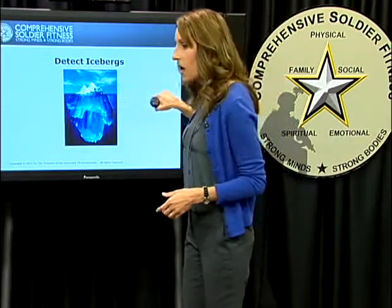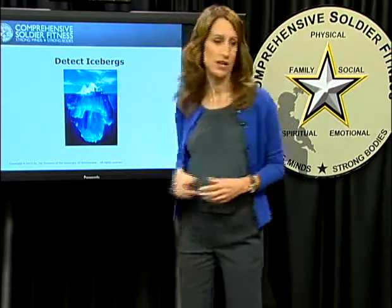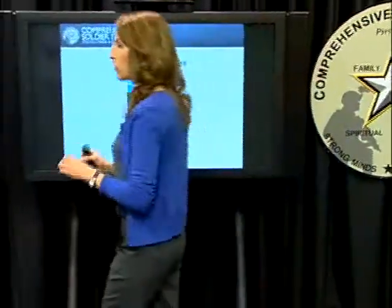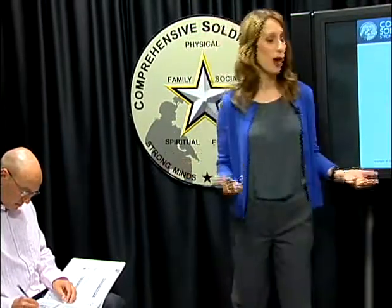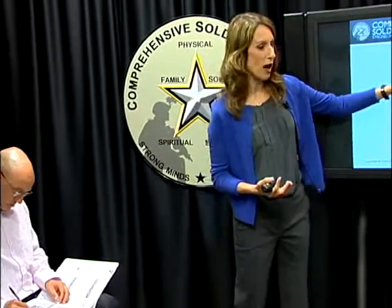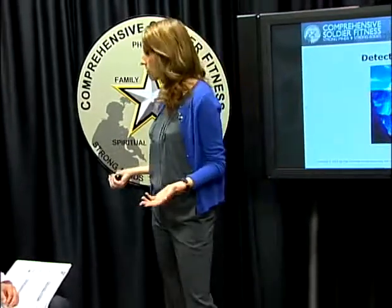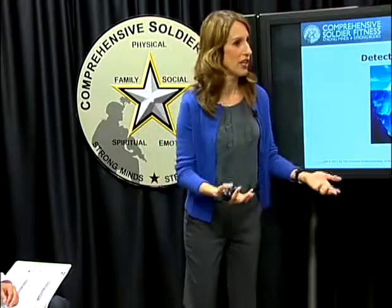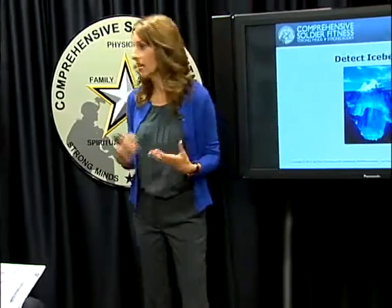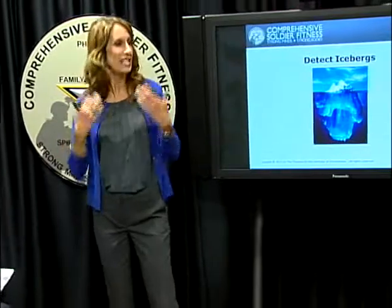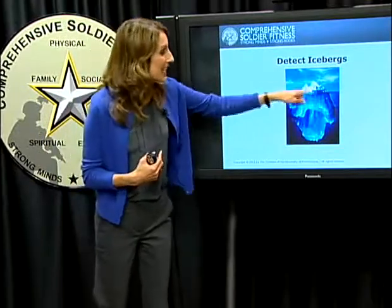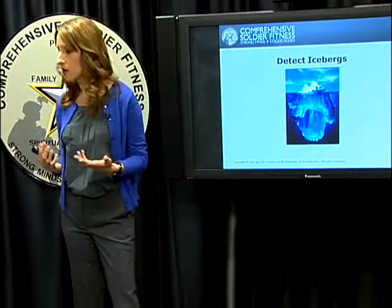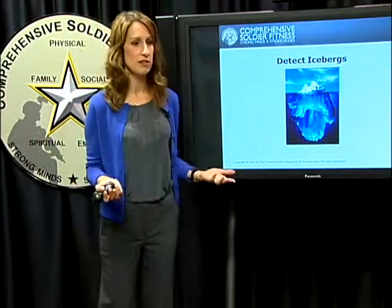Draw a little line by the water line and write 'surface of your awareness.' The water line in this picture of the iceberg represents what you're aware of. The things above the water line are your thoughts that you're aware of — I can ask what you're thinking, you check your thinking, and you could tell me. That thought is in your awareness, sticking above the water line.